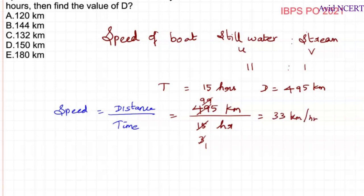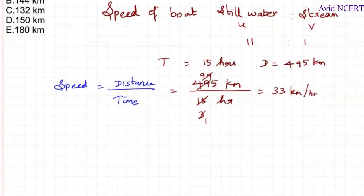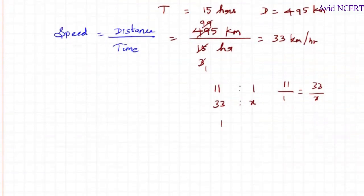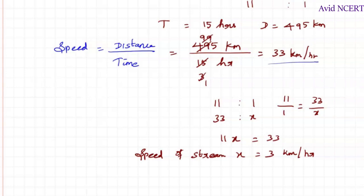Now we know the speed of the boat in still water and the ratio is 11 to 1. We can find the speed of the stream: 11 by 1 equals 33 by x, so 11x equals 33, giving x equals 3 kilometers per hour. So the speed of the boat is 33 km/h and the speed of the stream is 3 km/h.